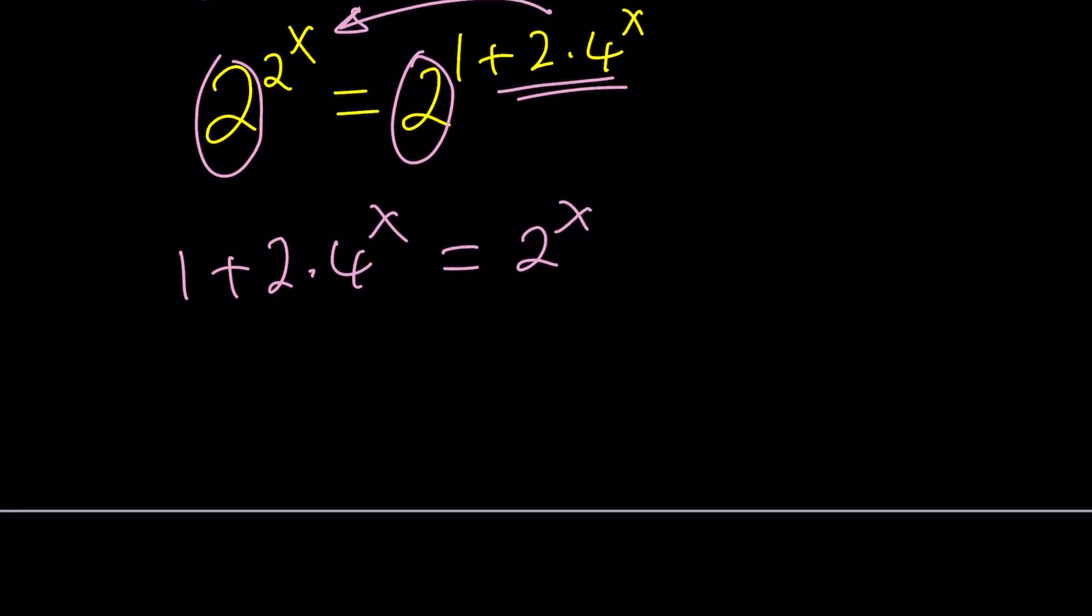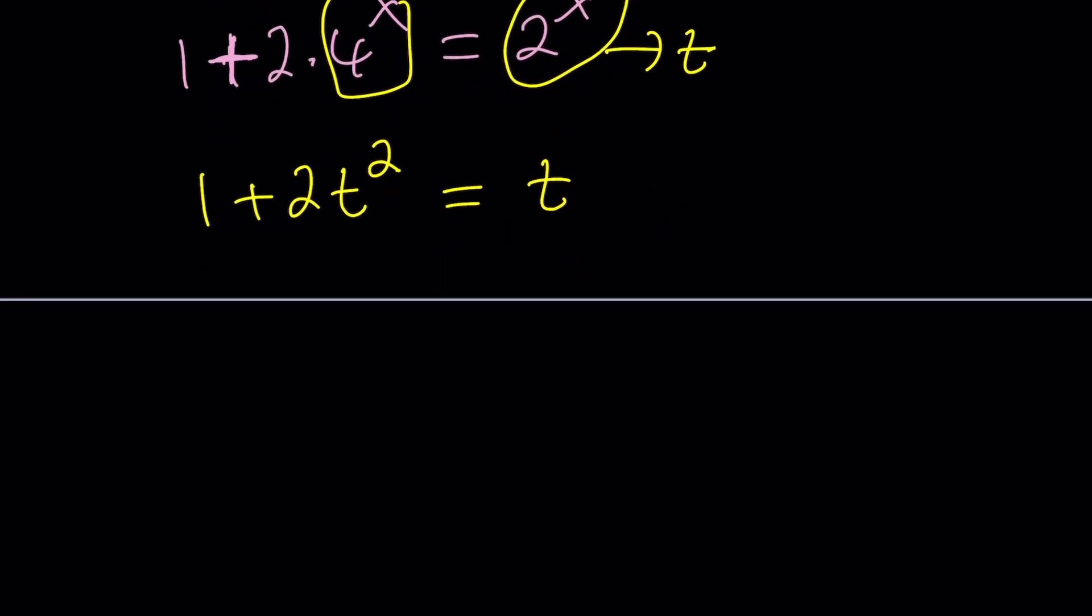And now, notice that we don't really need to bring anything else down, because we no longer have two exponentials with the same base. We have a 1 plus something, which is going to mess things up a great deal. But there's a way to solve it by substitution, because substitution is awesome. Let's call this something, how about t? t is fun. So now this is going to be t squared, right? 1 plus 2t squared equals t. Let's put everything on the same side: 2t squared minus t plus 1 equals 0.